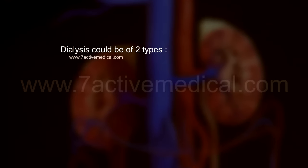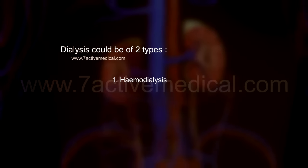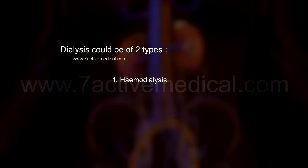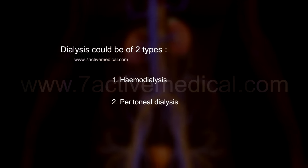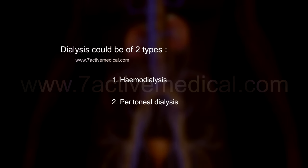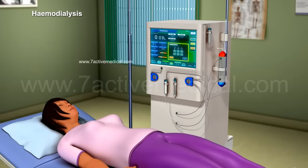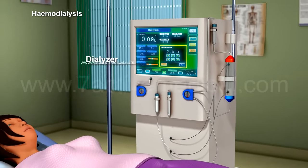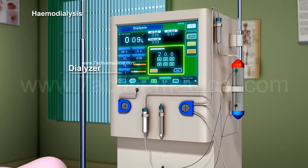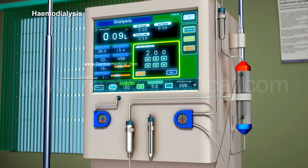Dialysis could be of two types: 1. Hemodialysis, and 2. Peritoneal dialysis. Hemodialysis is done with the aid of a dialyzer, which is a machine present outside the body that removes toxic substances from the blood.